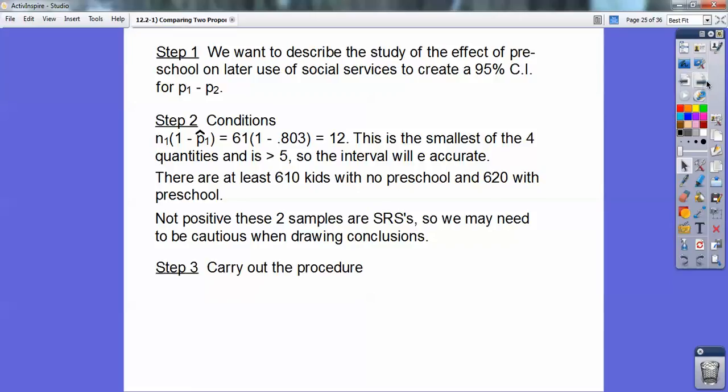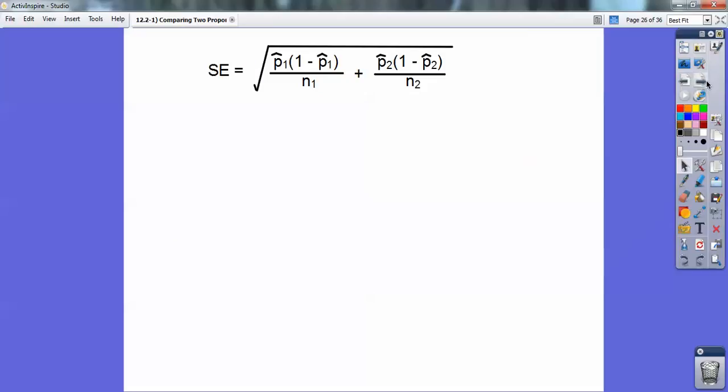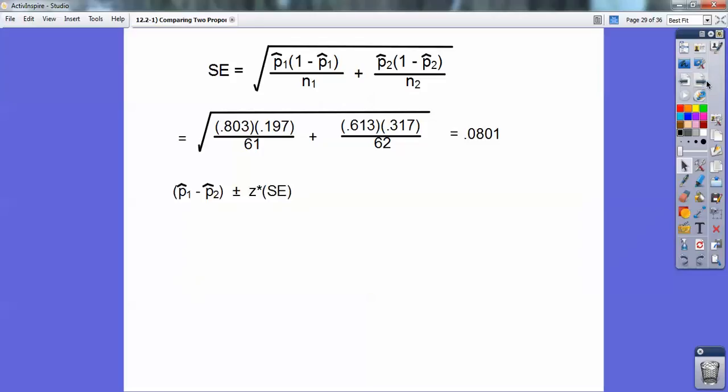Here's my standard error right here. Just plug in the numbers right there and we get 0.0801. And then we're going to plug that into our formula right here. So we get 0.803 minus 0.613 and then your Z-score for your 95% is 1.960 and that's in table C at the back of the book. So that cranks out to 0.033 to 0.347.